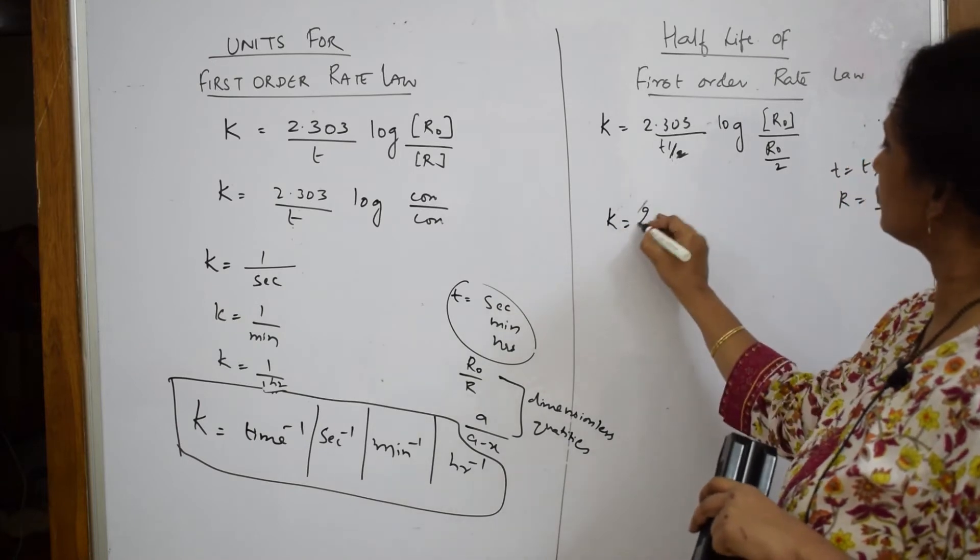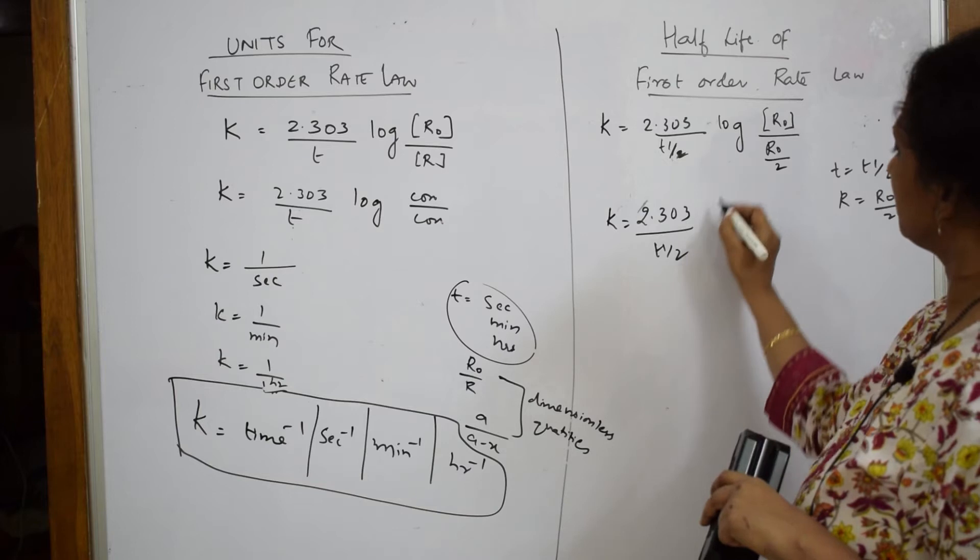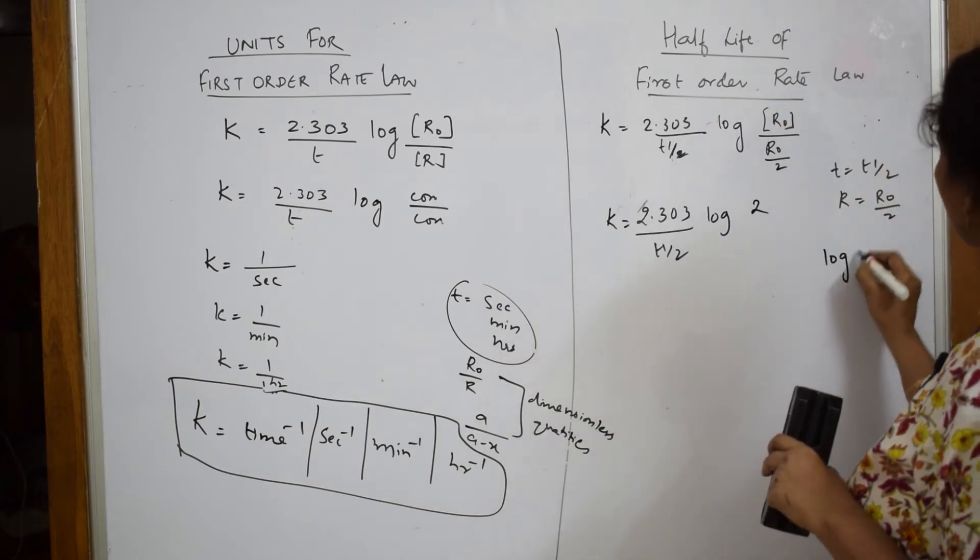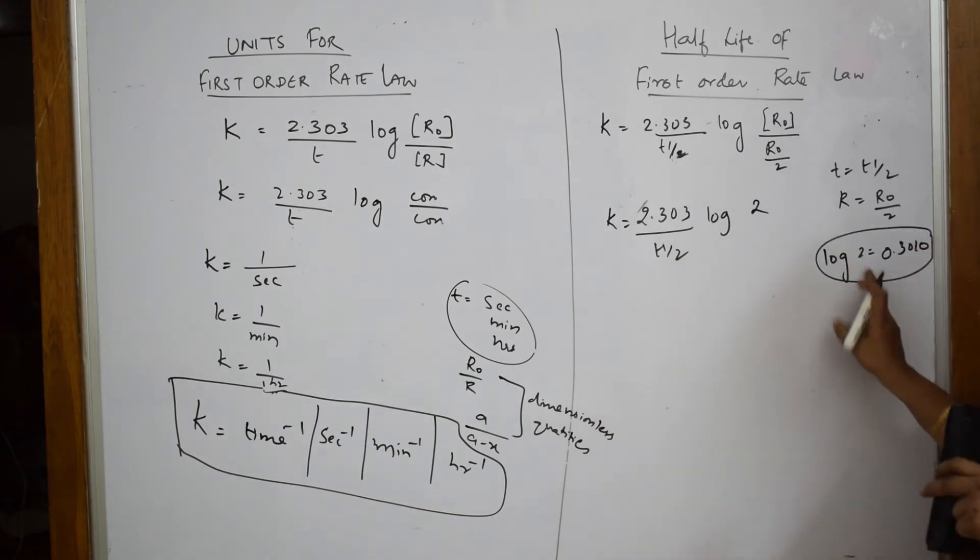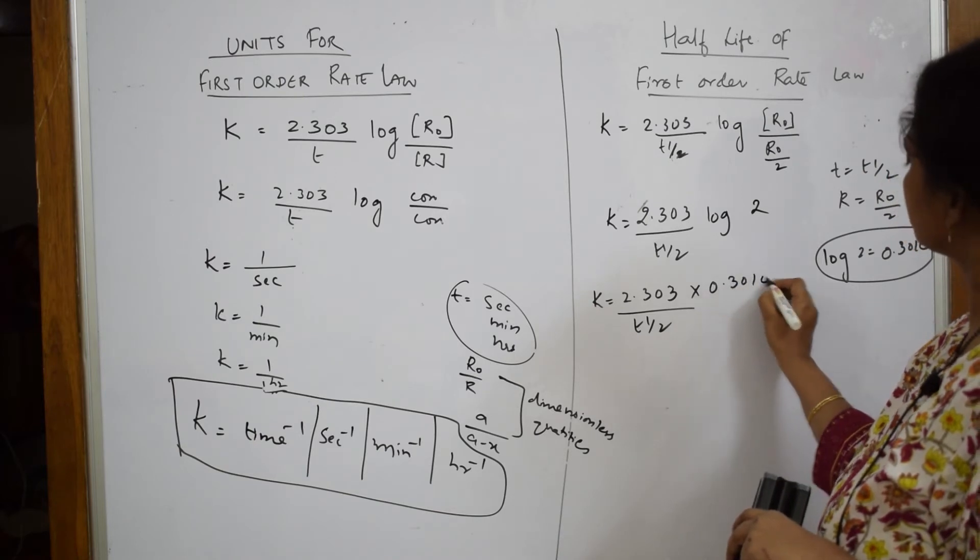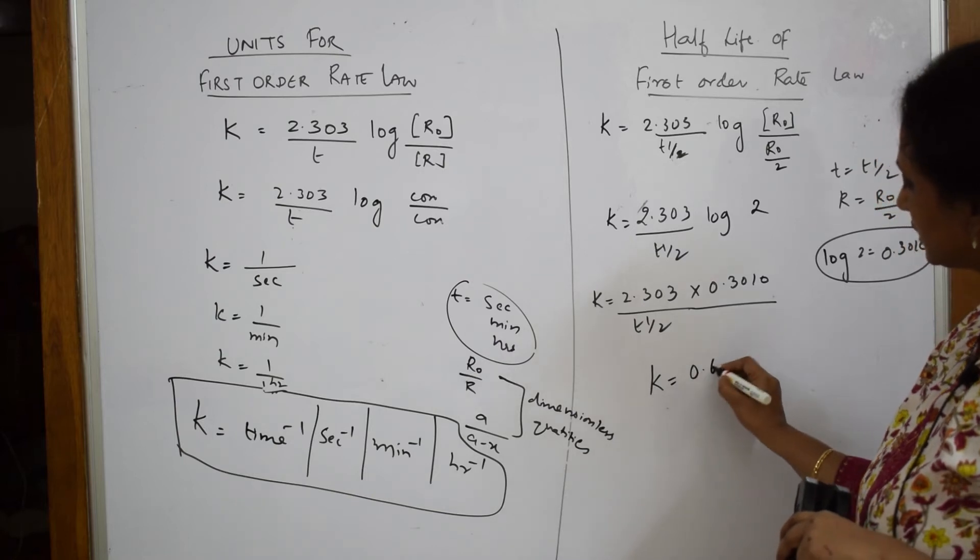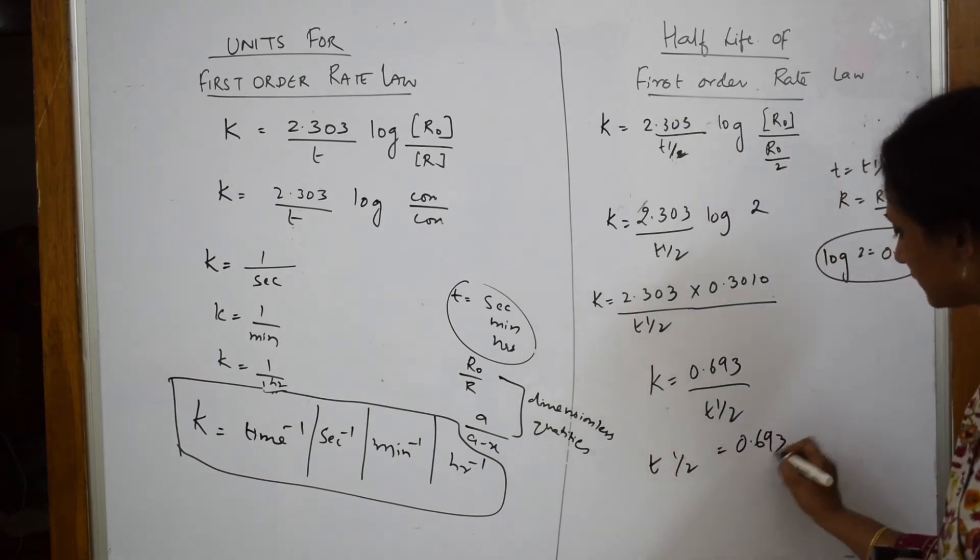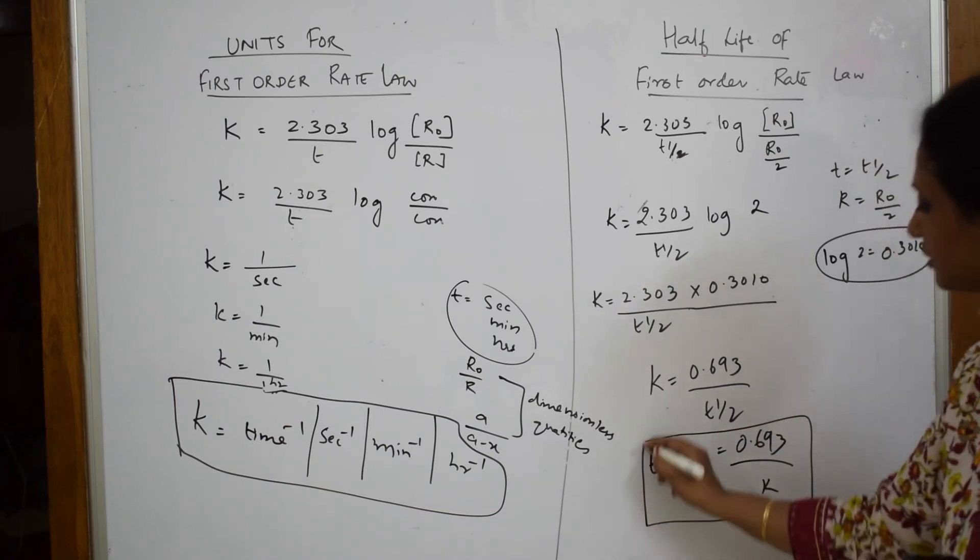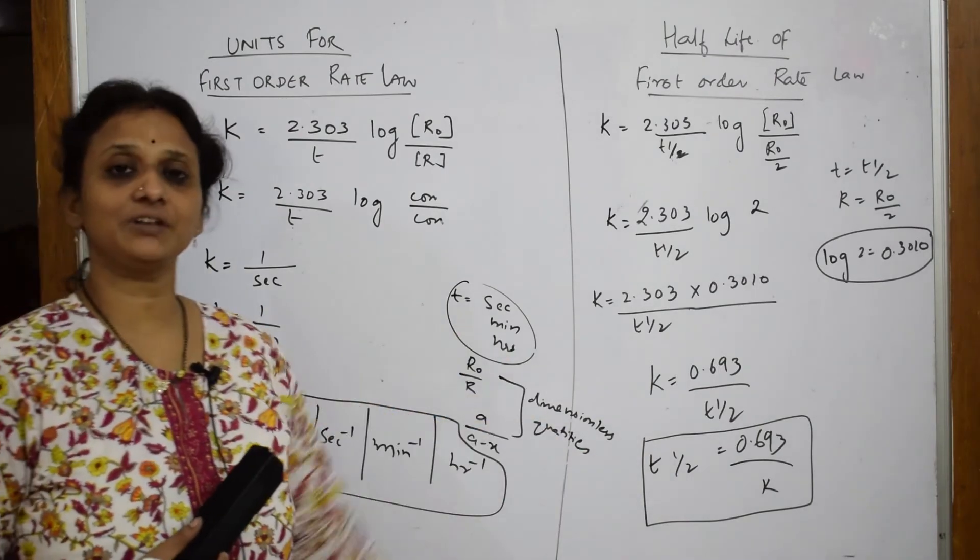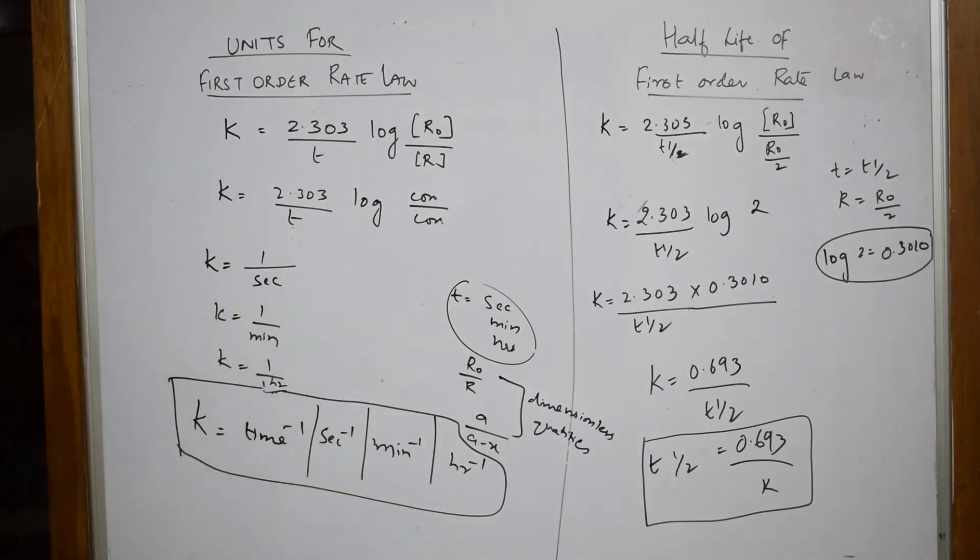Here when I take this, k is equal to 2.303 by t half. Now, what is this log? This is 1 by 1 by 2, right? So, 1 by 1 by 2 is log 2. So, what is log 2 value? It is 0.3010, isn't it? Now, substitute this value here. So, k is equal to 2.303 divided by t half into 0.3010. What do you get when you multiply? k value is equal to 0.693 by t half. Now, I have to find out t half. So, t half is equal to 0.693 by k. This is your half-life for the first-order rate equation. Where we have please practice the integrated rate equation, units, as well as half-life calculation because all these will be useful for your numericals.